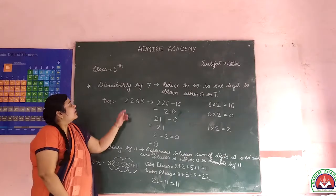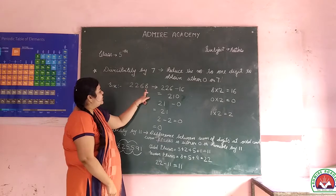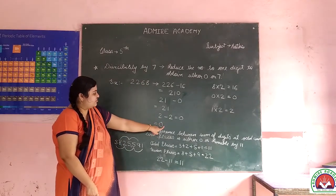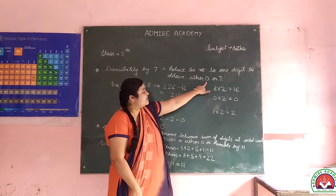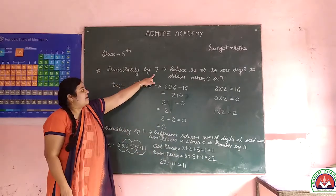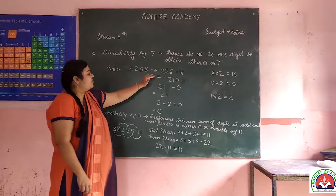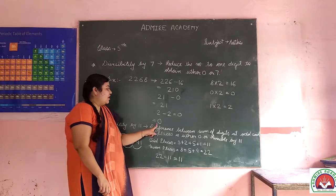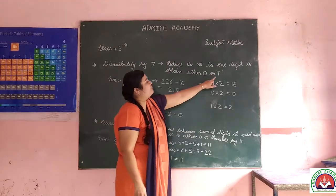A number is divisible by 7 if we reduce any number to one digit and we obtain the result either 0 or 7. So, any number is exactly divisible by 7 when we reduce the number to one digit and the result is either 0 or 7.